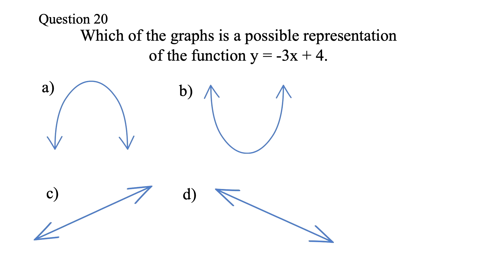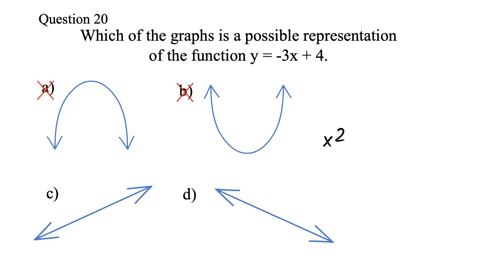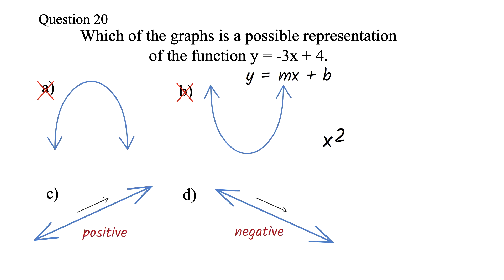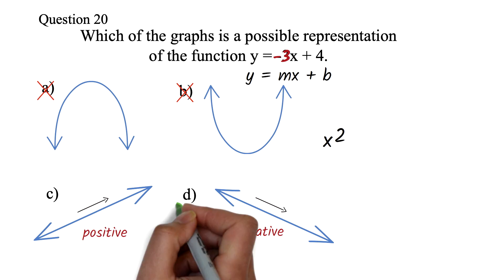Question 20: There are no values on the graph, so nothing to calculate. Options A and B are obviously wrong because they are parabolas — the graph of a quadratic function — and for that the function must have x squared. Both options C and D are linear functions. The slope of C is going up, so it's positive, while the slope of D is going down, so it's negative. Looking at the function in slope-intercept form y equals mx plus b, the slope here is negative 3. Since the slope is negative, the answer is choice D.